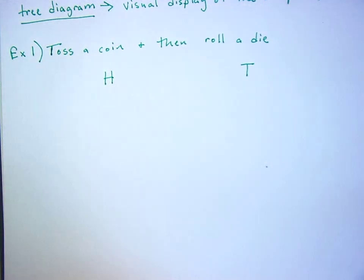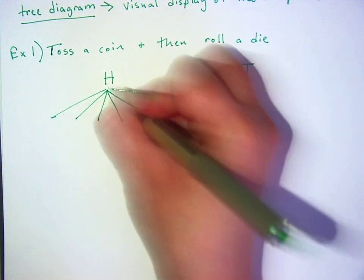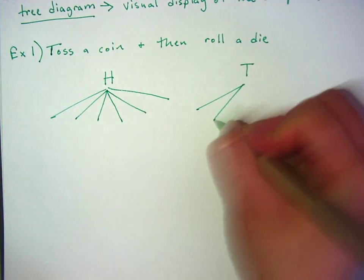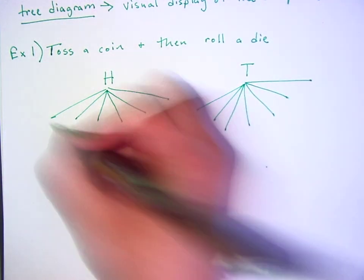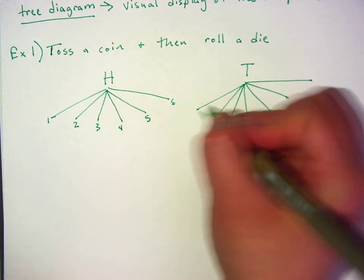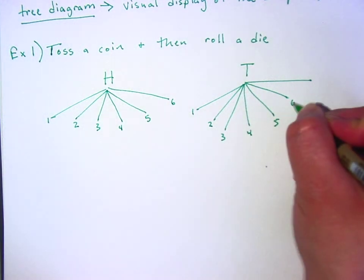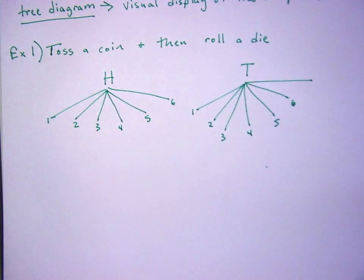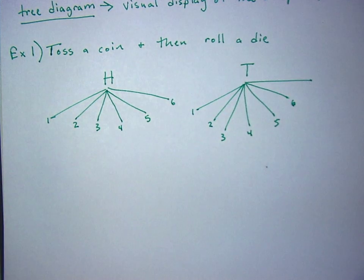Now, how many options are there for getting a dice? Six. So what we're going to do is we're going to branch off as a tree diagram. You're going to branch off of each one six times. Two, three, four, five, six. One, two, three, four, five, six.